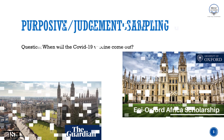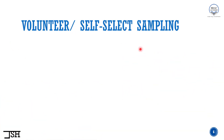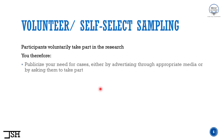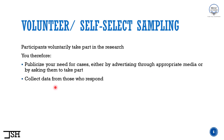Now let's move on to the next sampling method, which is volunteer sampling or self-select sampling. Again, the meaning is hidden in the name — volunteer or self-select. What happens here? Participants voluntarily take part in the research. The cases in the sample are going to participate voluntarily or select themselves on their own. We publicize our need for cases by advertising to appropriate media or by asking them to take part in the survey or interview, and then we collect data from those who want to respond.